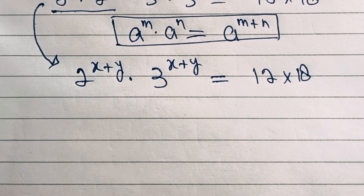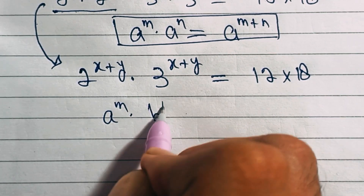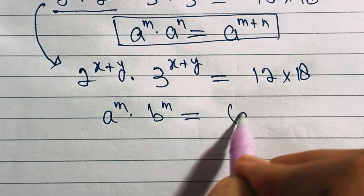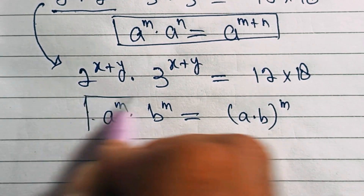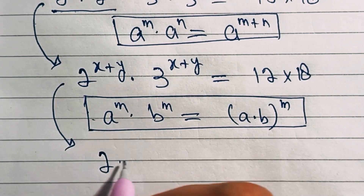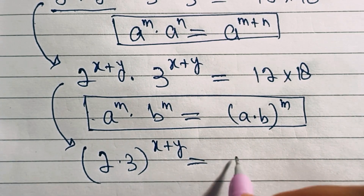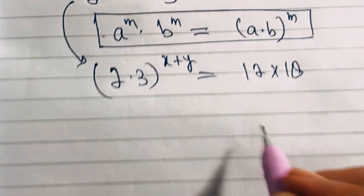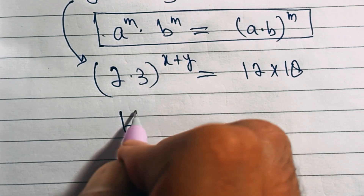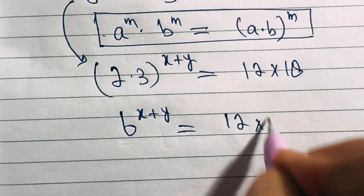Now we have same exponents with different bases, so we apply the formula a^m times b^m equals (a times b)^m. This equation becomes (2 times 3)^(x+y) equals 12 times 18. Since 2 times 3 is 6, we have 6^(x+y) equals 12 times 18.